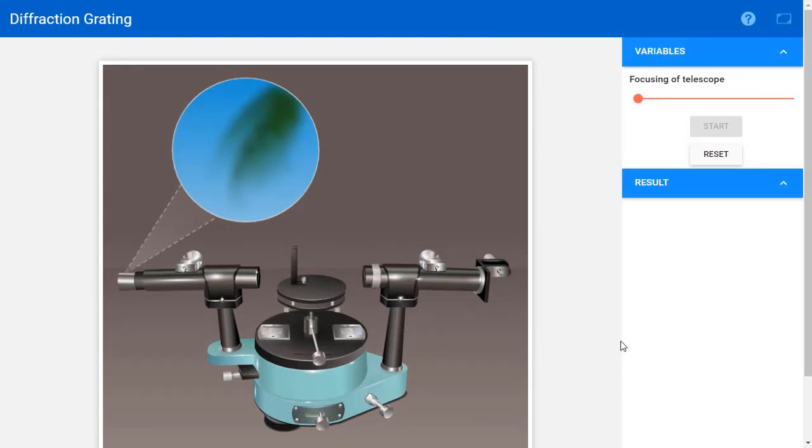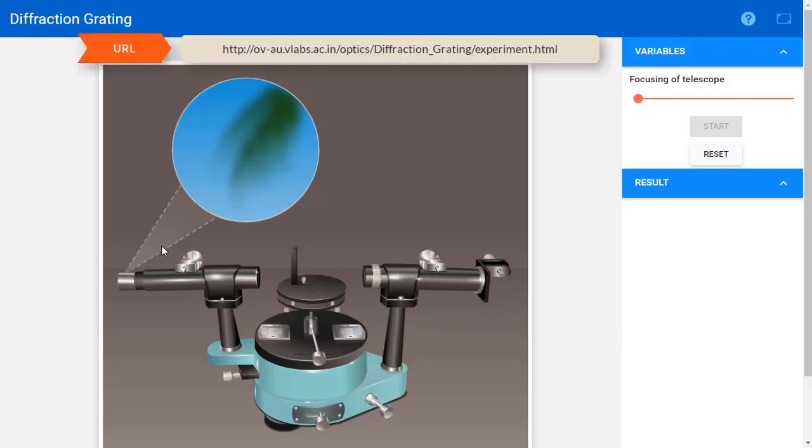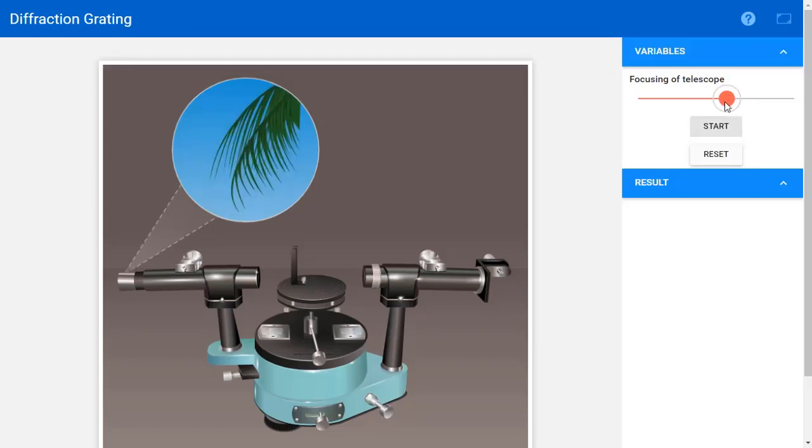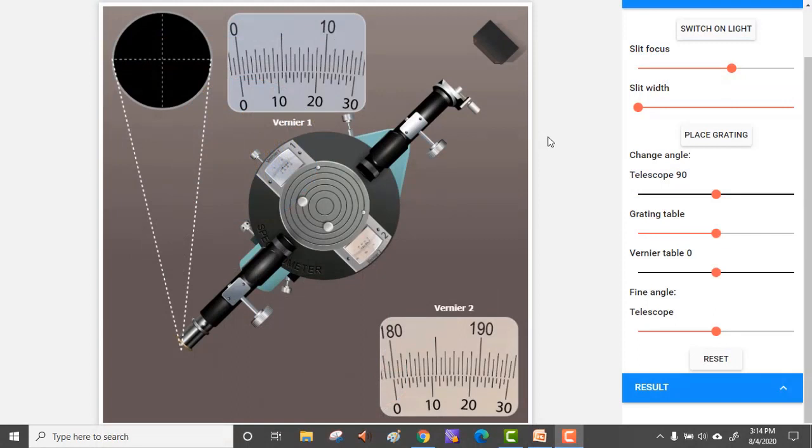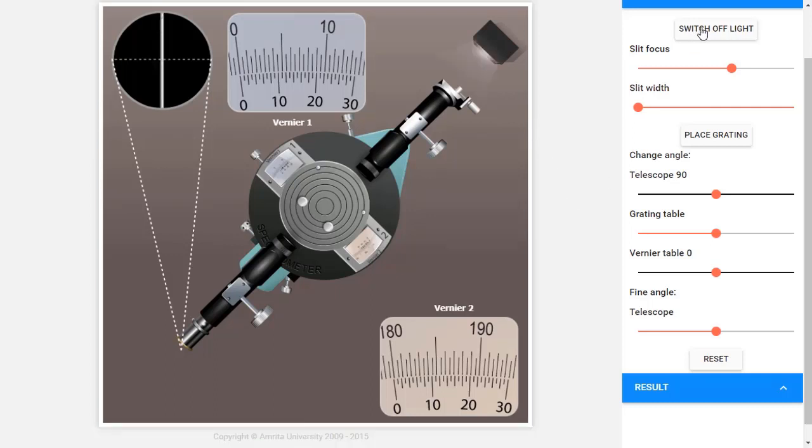This is a virtual lab setup that can be accessed on the web. The circular area shows what we would see looking into the telescope in an actual setting. We adjust the focus to get a sharp image of the object, which is, in this case, a leaf. Proceeding further, we can see a page where we can get a feel of what to expect in a real environment. Before anything else, we switch on the light.